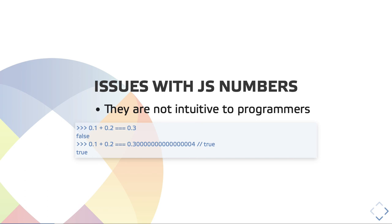This is a very typical example of problems that programmers might face in JS using numbers — the primitive numbers that we have in the language. If we try to add 0.1 and 0.2, we expect, of course, that the result is going to be 0.3. But if we do a comparison — if you write a program where we have literal 0.1 plus literal 0.2 equals equals equals 0.3 — the comparison is going to return false, which is quite not intuitive.